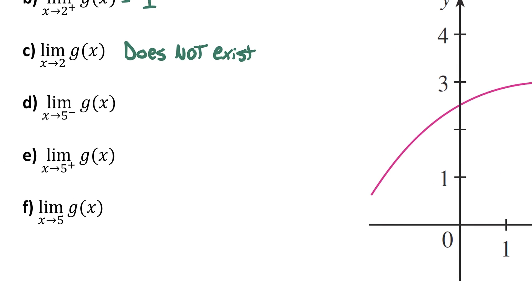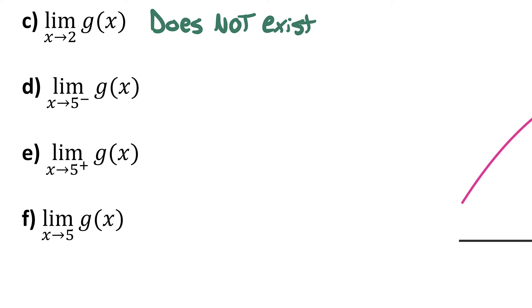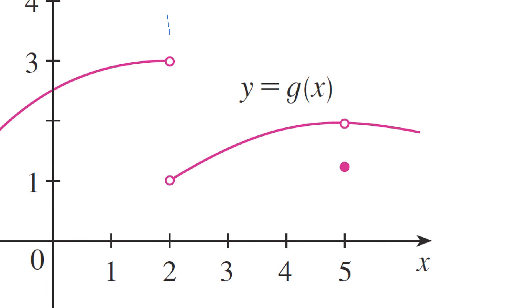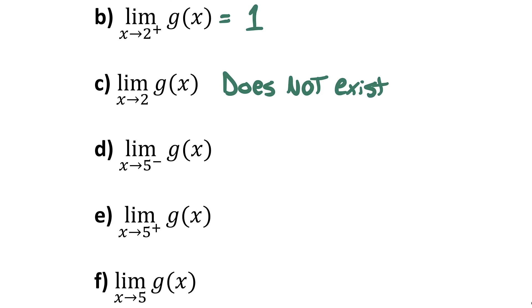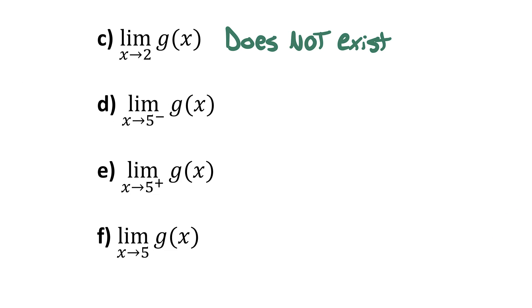Now let's do Parts D, E, and F, finding the left and right limits as x approaches 5. For Part D, we want the limit of g(x) as x approaches 5 from the left. Let me draw a vertical line through x=5. Looking to the left of x=5, as the x value of the function approaches 5 from the left, the y value seems to be approaching 2 on the y-axis. So the limit as x approaches 5 from the left of g(x) equals 2.